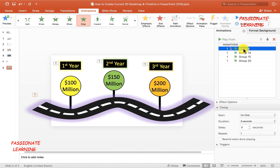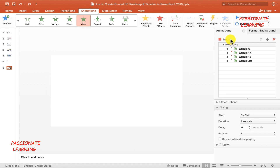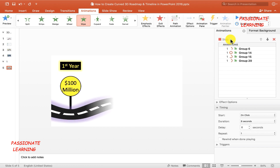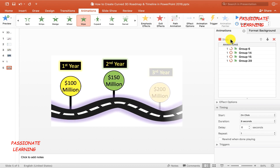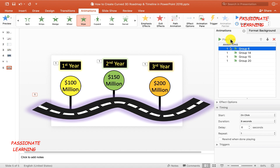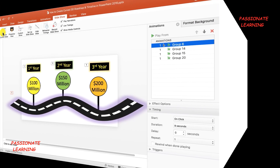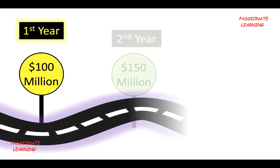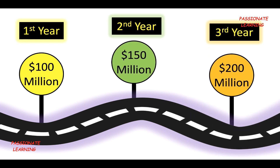Now let us play this entire animation to see what we have created. You can see here this is the particular 3D roadmap which is being animated, along with the various timelines for the sales figures. So now let me save this presentation by doing Ctrl+S, and then let us see the slideshow from the current slide. Here we are — let me press the enter button. And you can see that we have been able to create a beautiful curved 3D roadmap and we have also been able to add a timeline which shows the sales figures of a company over a period of 3 years.